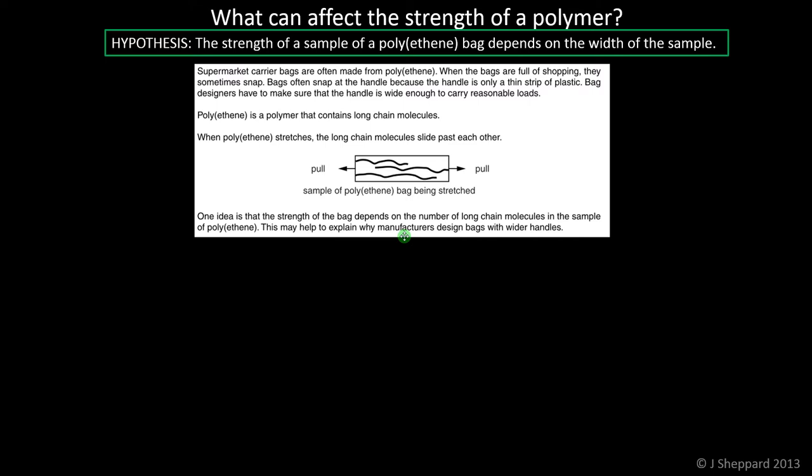Below is the science included in the OCR data sheet that you will have in your folder. Supermarket carrier bags are often made from polythene. When the bags are full of shopping, they sometimes snap, often at the handle because the handle is a thin strip of plastic. Bag designers have to make sure the handle is wide enough to carry reasonable loads. Polythene is a polymer that contains long-chain molecules. When polythene stretches, the long-chain molecules slide past each other. One idea is that the strength of the bag depends on the number of long-chain molecules in the sample of polythene. This may help to explain why manufacturers design bags with wider handles.